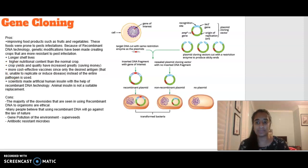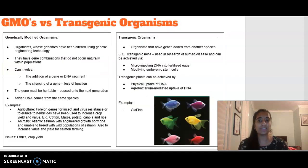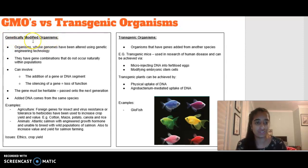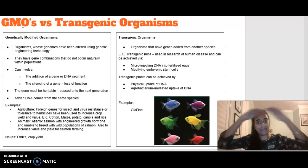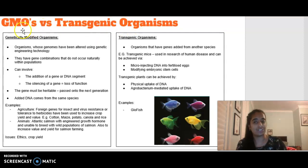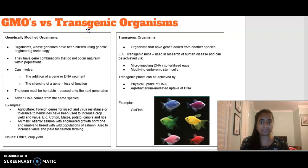Moving on to GMOs and transgenic organisms. When we think of GMOs — genetically modified organisms — we're talking about any organism that has its genes modified or altered in any way. I want us to think of GMOs as our umbrella heading, and transgenic organisms as a type of GMO. So all transgenic organisms are GMOs, but not all GMOs are transgenic organisms.